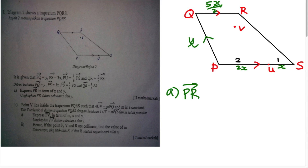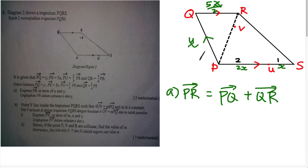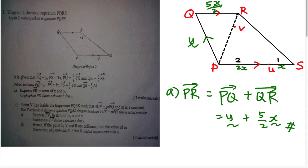You can see a triangle in the diagram, and PR is the resultant vector. Using the triangle addition law, PR = PQ + QR. We have PQ = y and QR = 5/2 x, so PR = y + 5/2 x. One mark for stating the triangle law, one for solving, one for the correct answer.